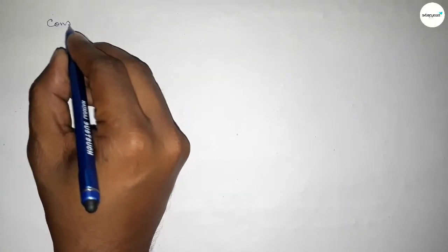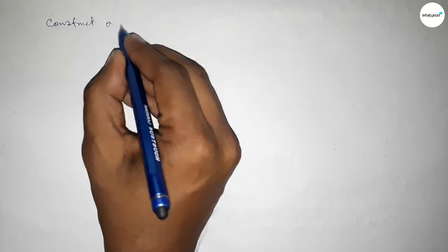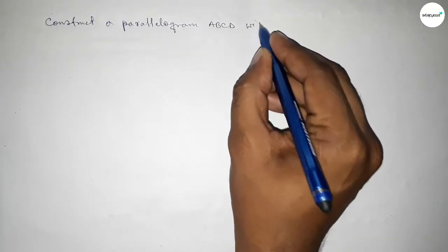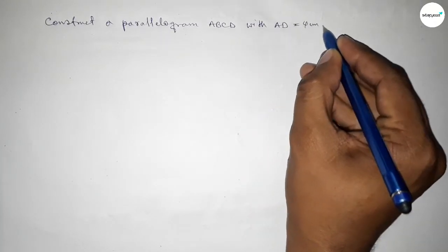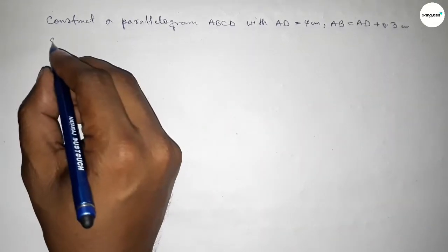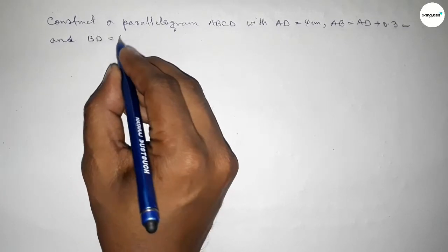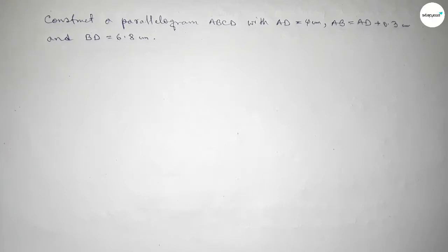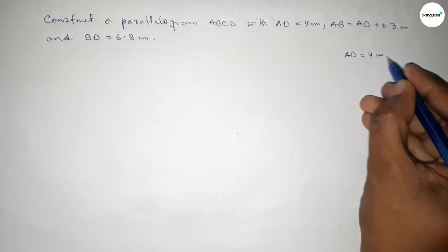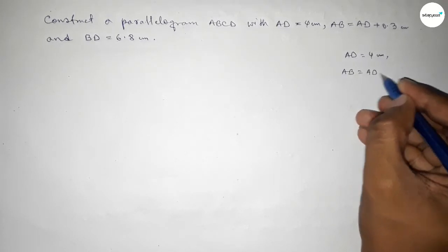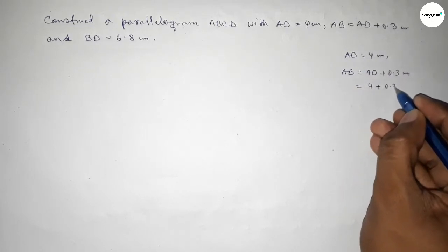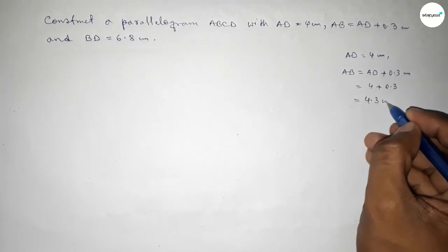Welcome to SI Share Classes. In this video, we have to construct a parallelogram ABCD in which AD = 4 cm, AB = AD + 0.3 cm, and one diagonal BD = 6.8 cm. First, calculating AB: given AD = 4 cm, AB = AD + 0.3 cm, so putting the value of AD = 4, AB = 4.3 cm.